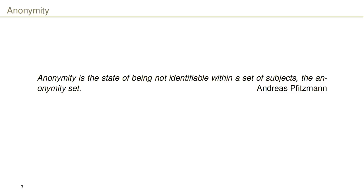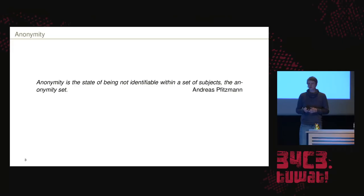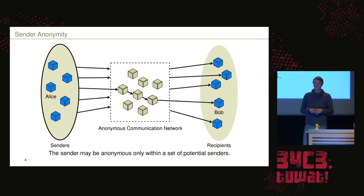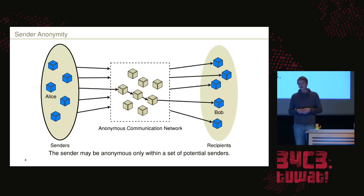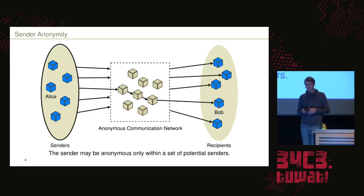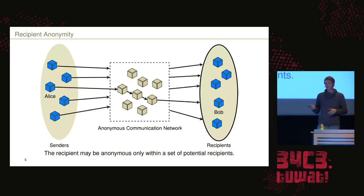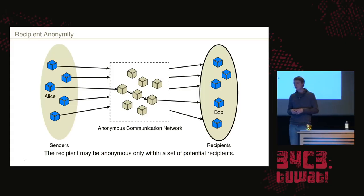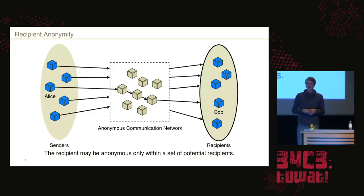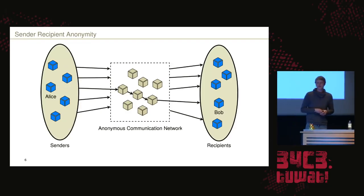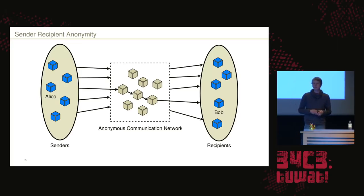What is anonymity? Anonymity is the state that a being is not identifiable within a certain set — within a certain group — the anonymity set. On the left side we see Alice, and she is within an anonymity set of senders who send their traffic towards the ACN, the Anonymous Communication Network. The same is valid for Bob: he is within a set of potential recipients and can achieve recipient anonymity. There is also the option that both sides are anonymous — sender-recipient anonymity.